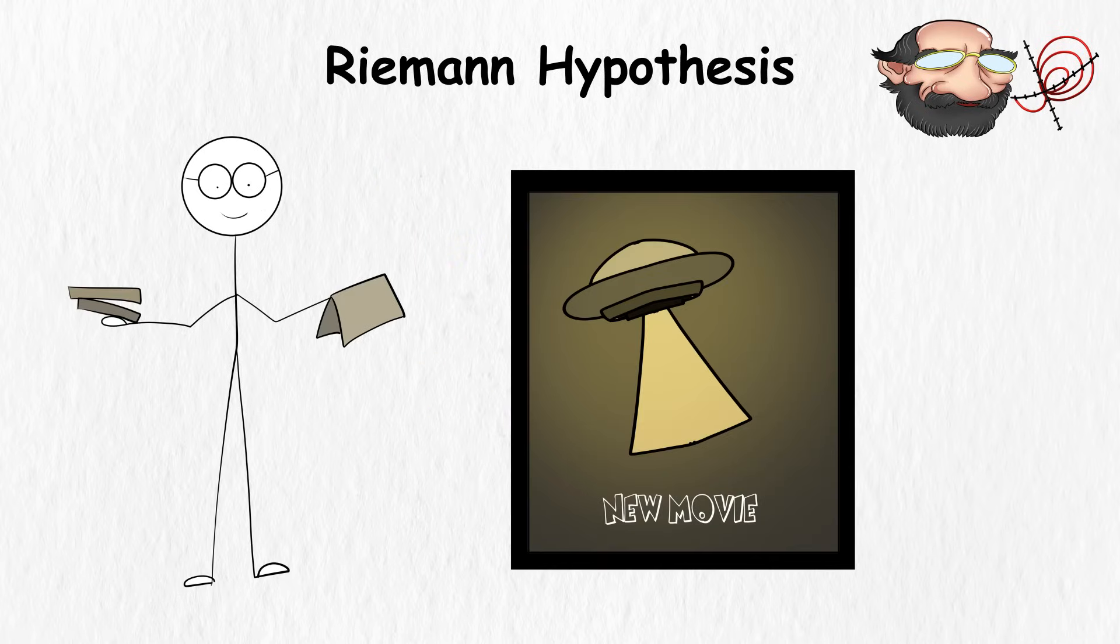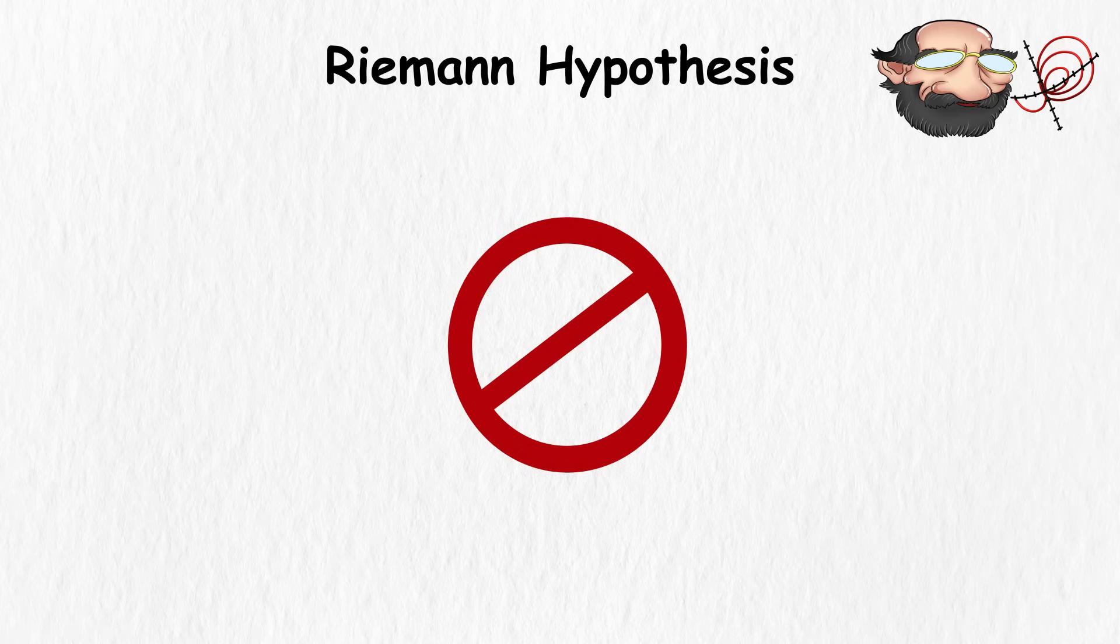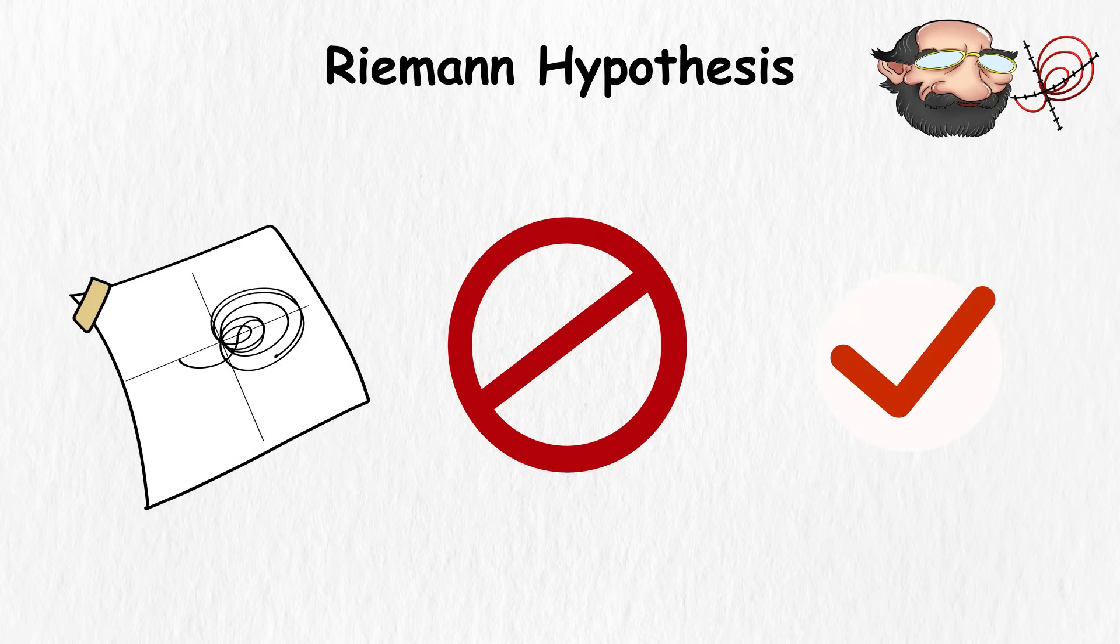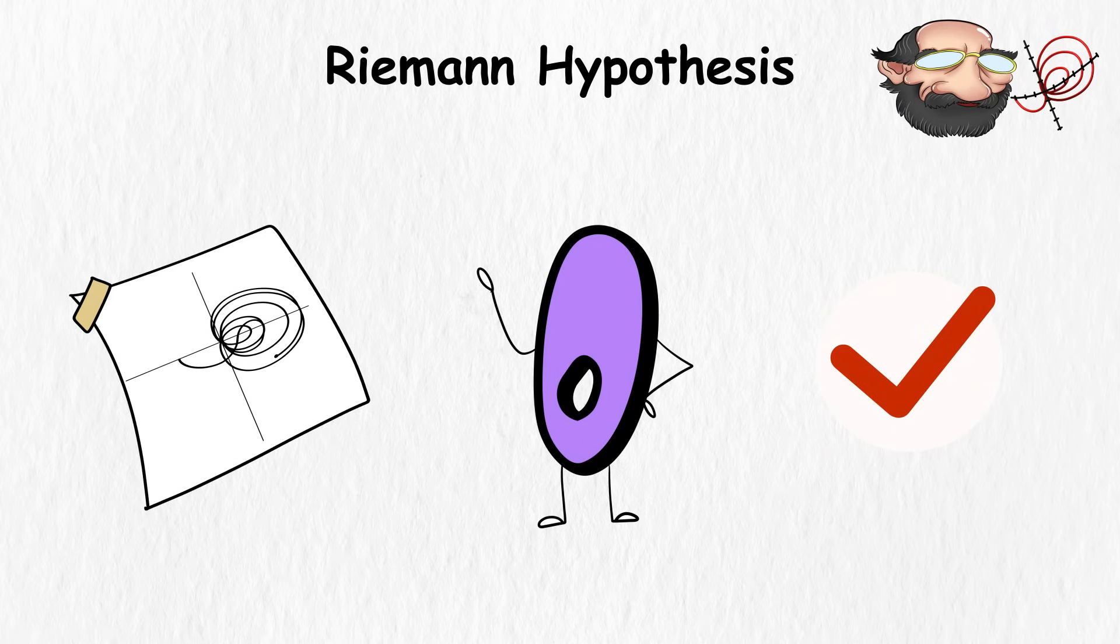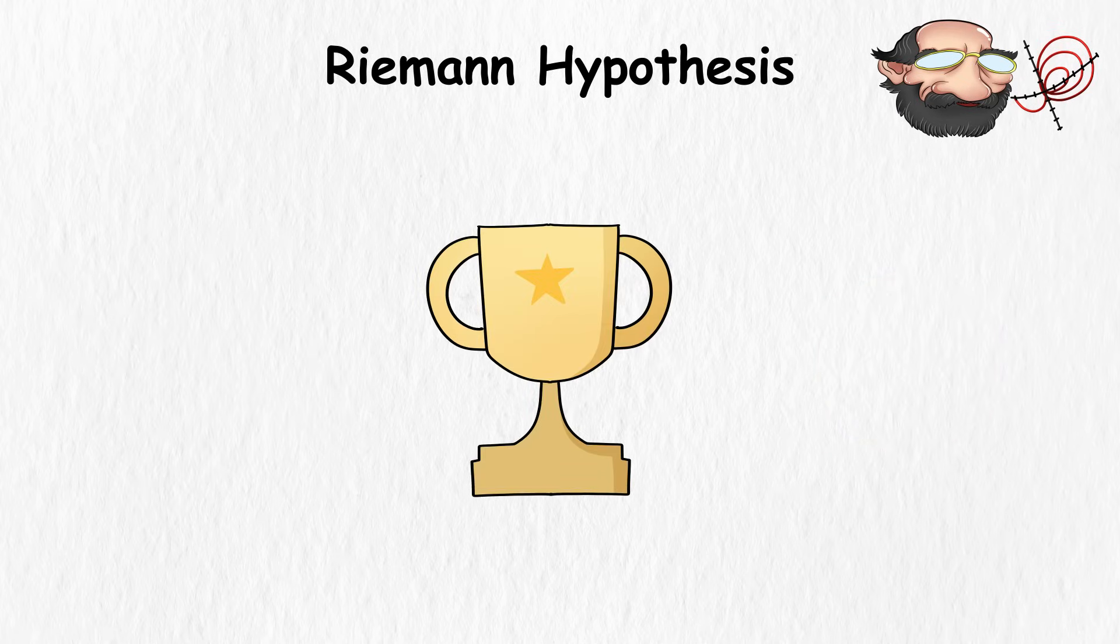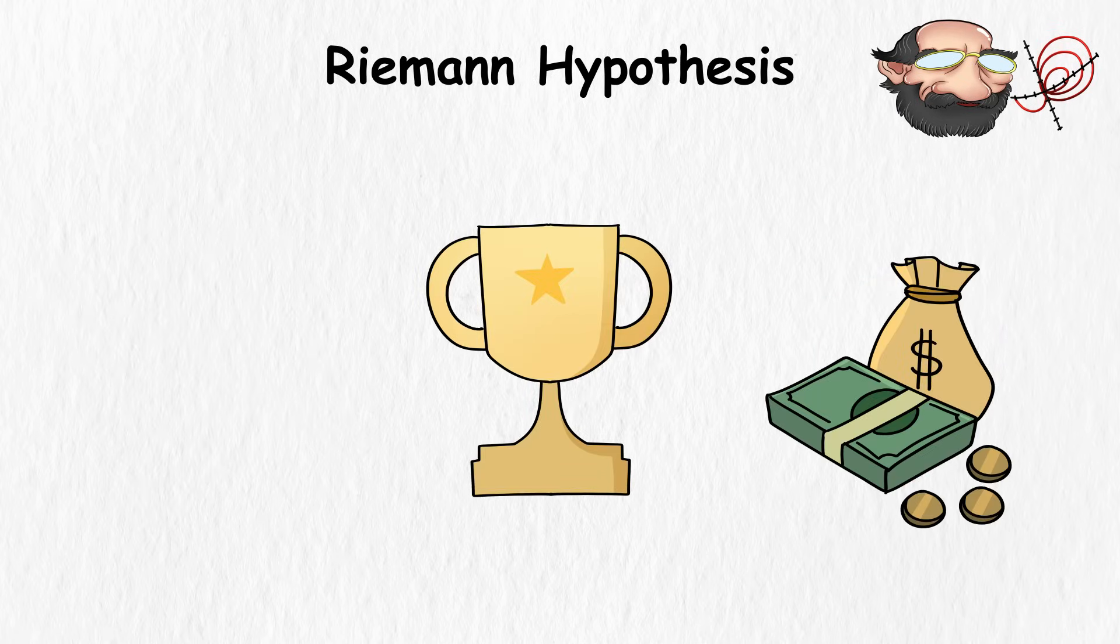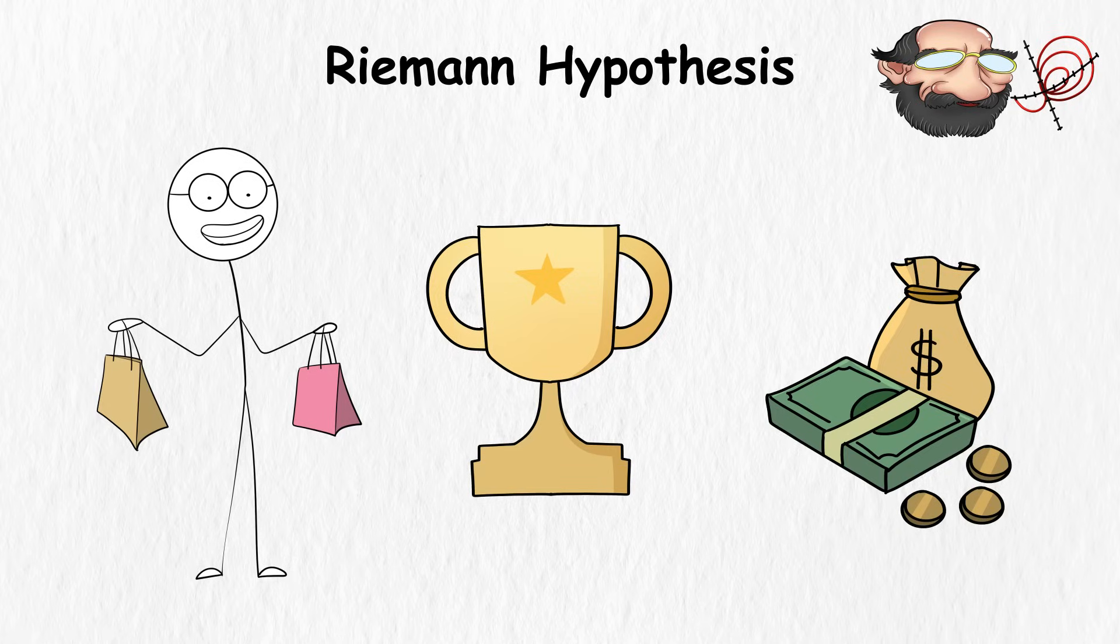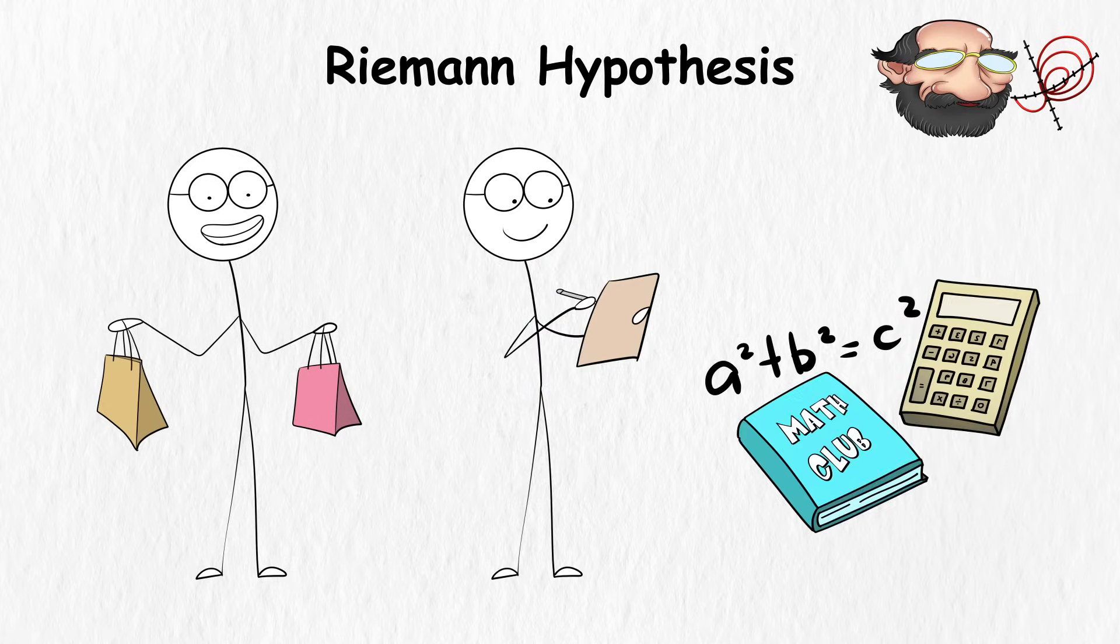Despite countless geniuses and number nerds trying, nobody has found a tidy proof to show that Riemann's prime party alignment holds true for all the zeros. It's one of the famous millennium prize problems, which can get you a million dollars if you can crack it. So if you want to be a million bucks richer, you better work on that 10th grade algebra.